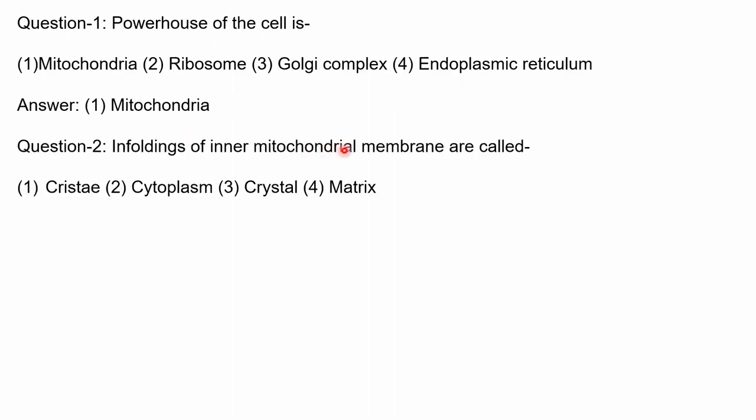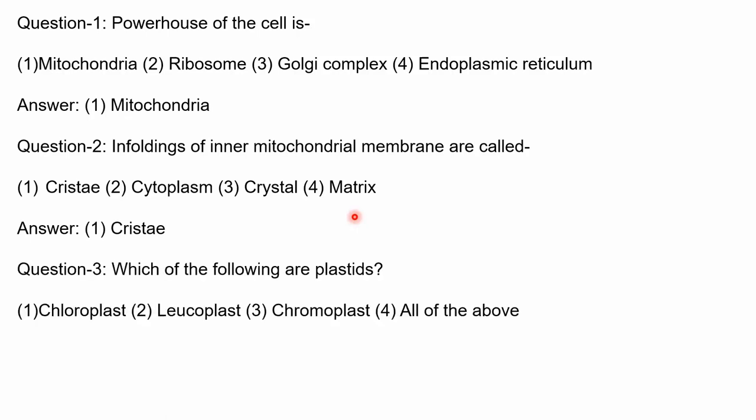Question 3: Which of the following are plastids — chloroplast, leucoplast, chromoplast, or all of the above? The answer is all of the above, since chloroplasts are green-colored plastids, leucoplasts are colorless plastids, and chromoplasts are colored plastids present in fruits and leaves — all are types of plastids. Question 4: Thylakoids arranged in stack-like piles of coins are called — the answer is granum. Stroma is the matrix of the chloroplast itself, not the stacked thylakoids.